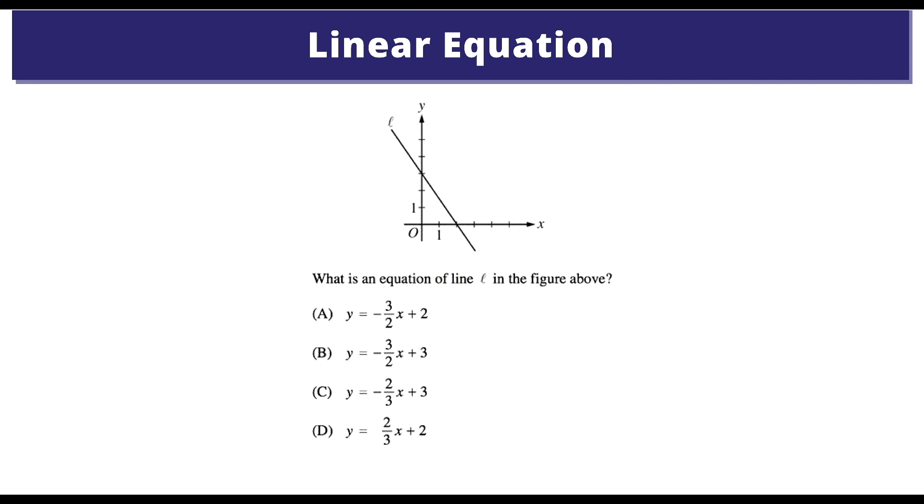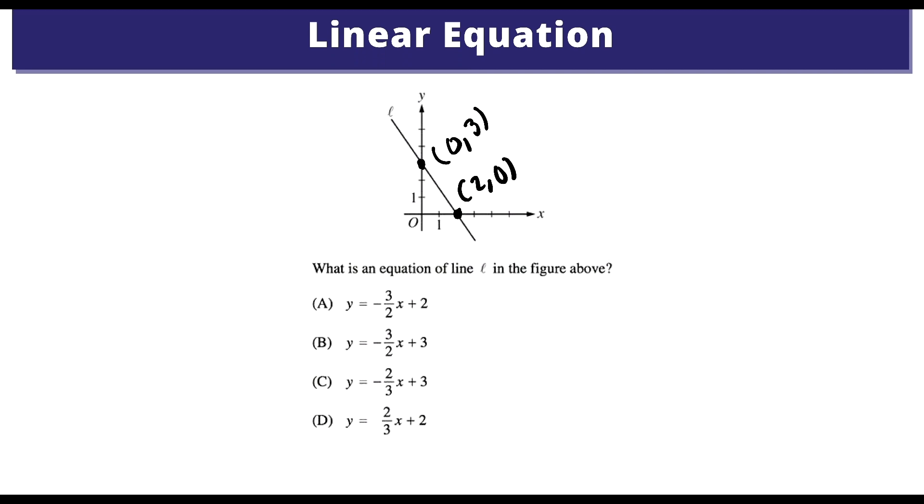What is an equation of line L in the figure above? Let's see. So we need to find the slope, and we do that through rise over run. So let's try to identify the points here. One point here, one point here. This is 2, 0. And this one, 0, 3.